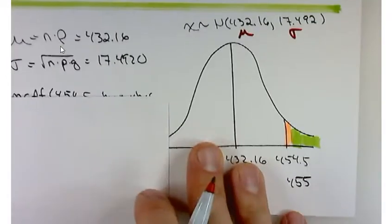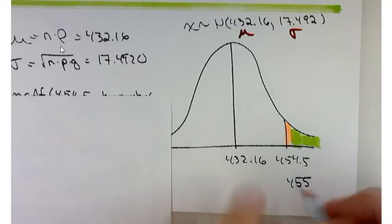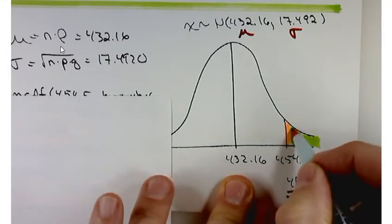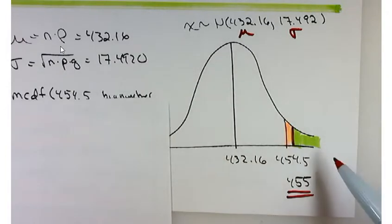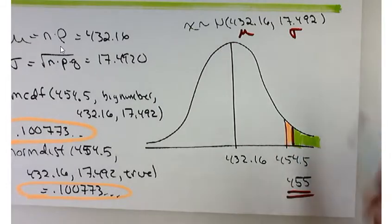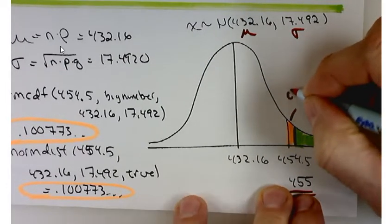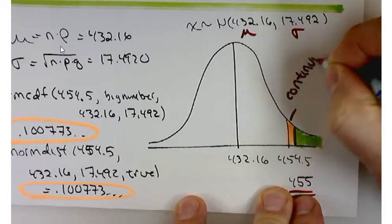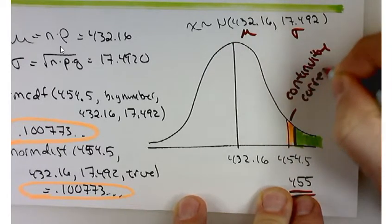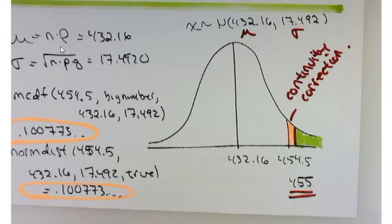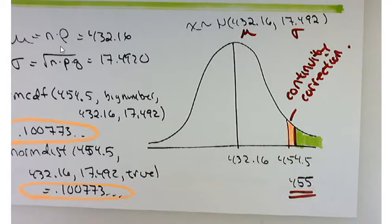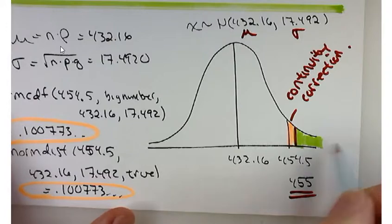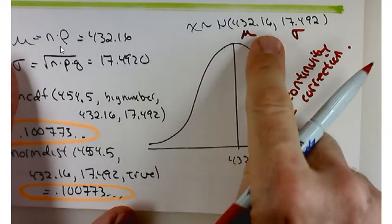We want to find the area to the right of 455, which is right here. But remember when we're using a continuous random variable to approximate a discrete random variable, you've got to add the continuity correction. And that turns that 455 into 454.5. So we're going to find the area to the right of 454.5 underneath this curve.